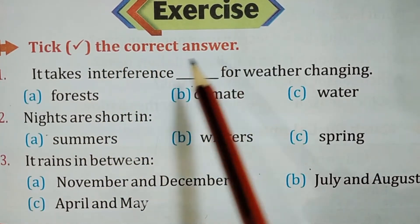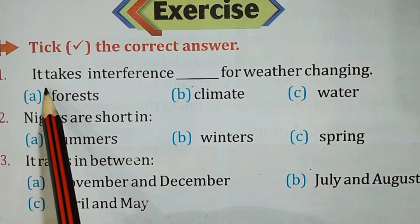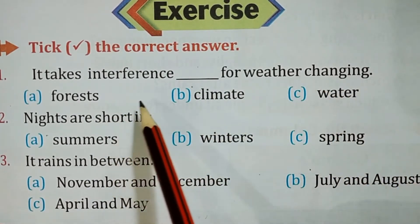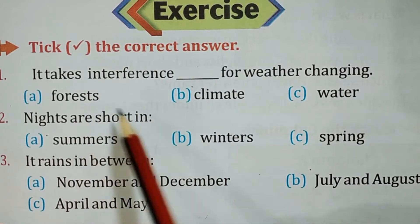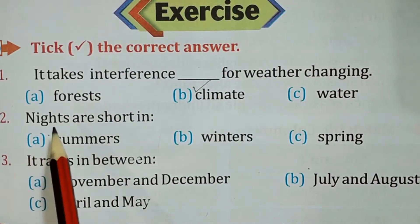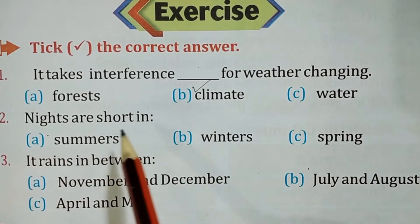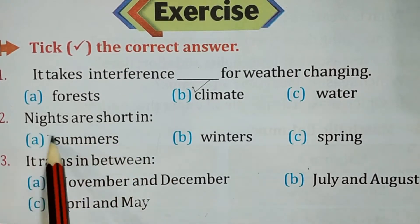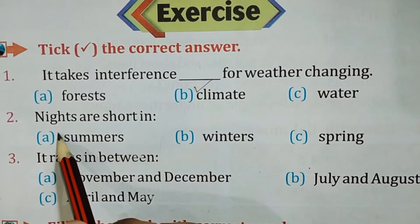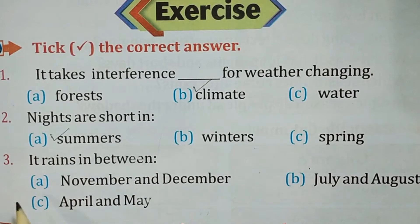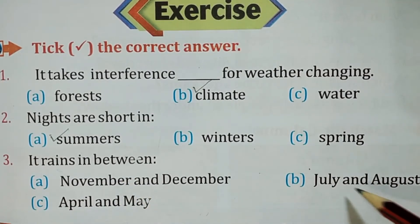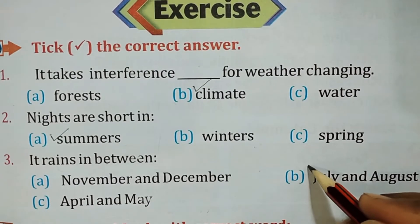First, tick the correct answer. It takes — for weather changing. In the winter, which means forests. Climate, water — which means climate. Nights are short in summer. Spring, summer. It rains in between — which means November and December, July and August, April and August, July and August.